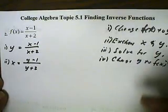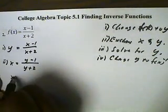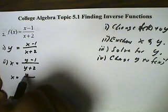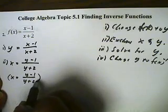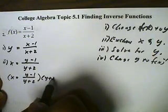Alright, third step, solve for y. To solve for y, I want to get rid of my denominator by multiplying both sides by the y plus two.